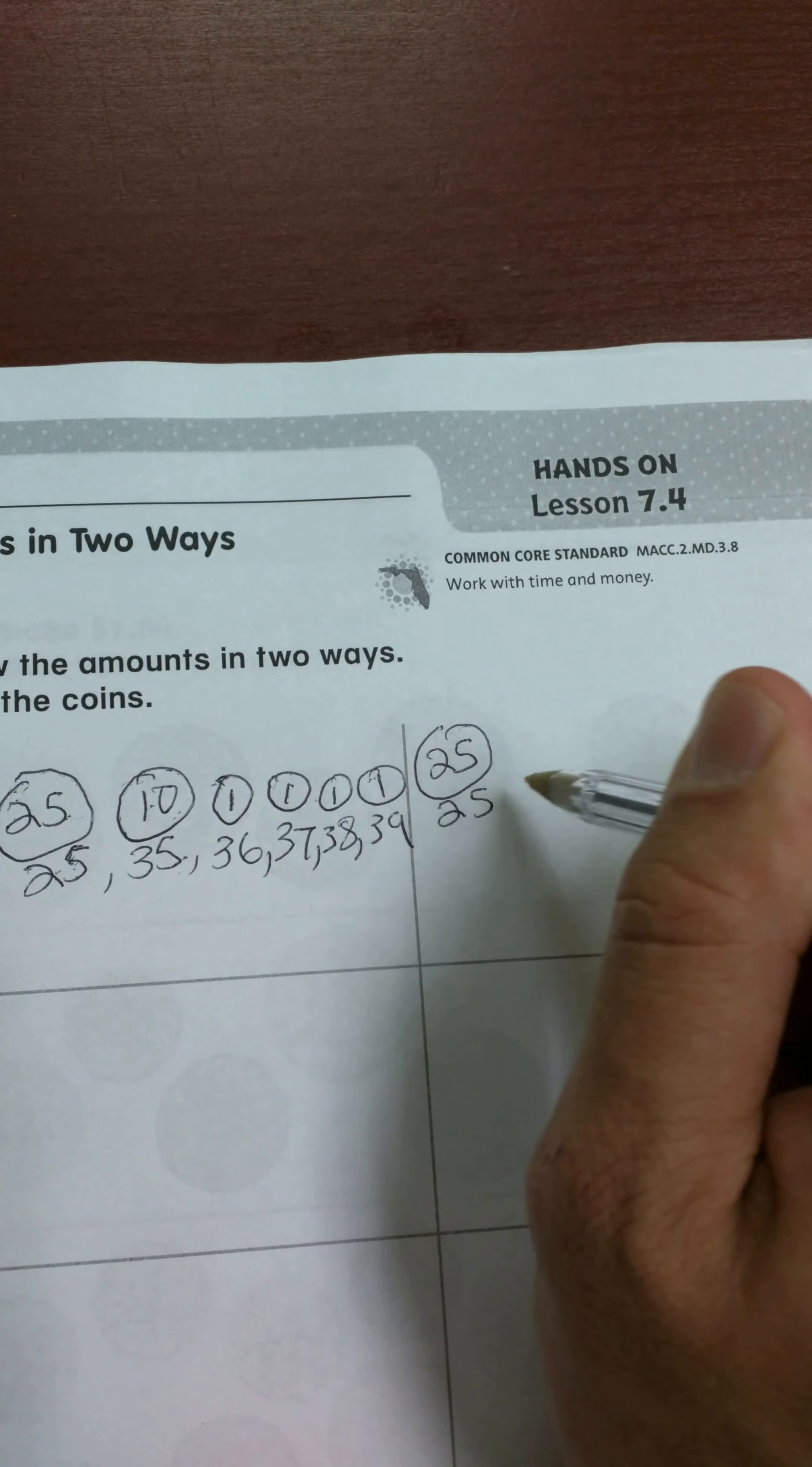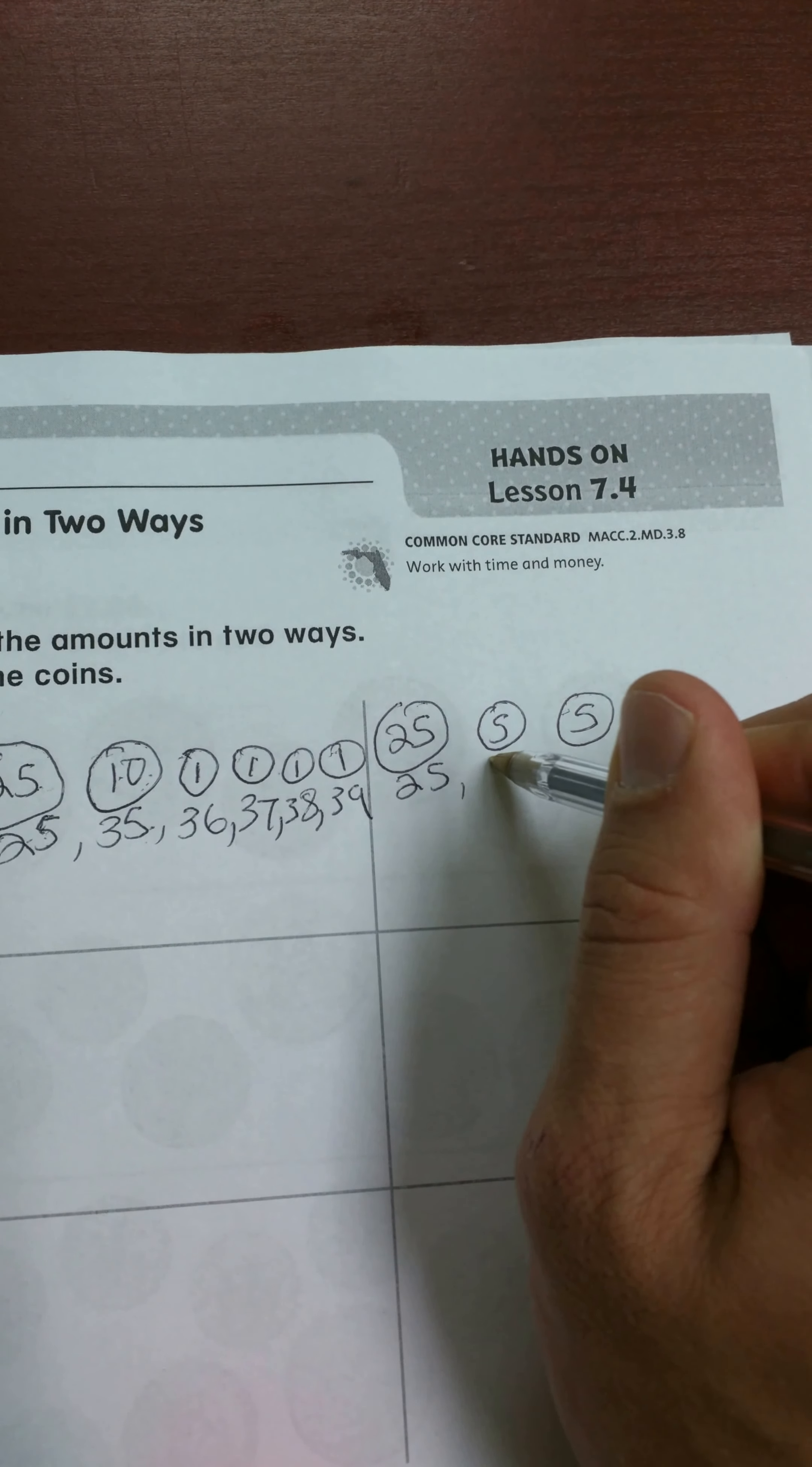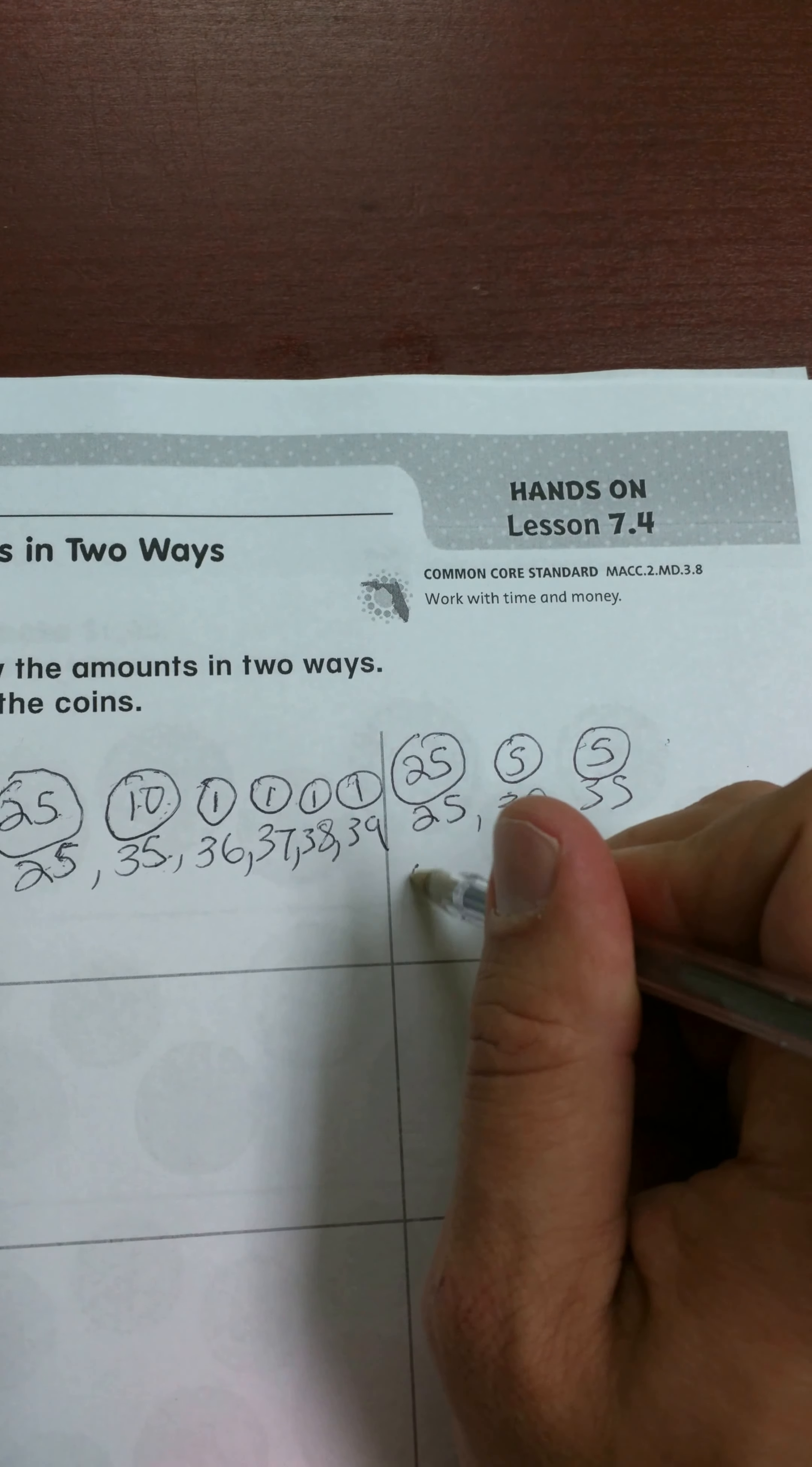So I have 25 cents. Now instead of using the dime, I'm going to use two nickels. So now I have 30 and 35. And I could check that, right when I got the dime I had 35. So now all I need to add is my pennies because I can't use something else for that.